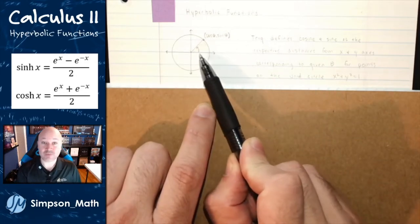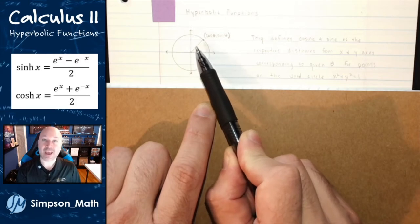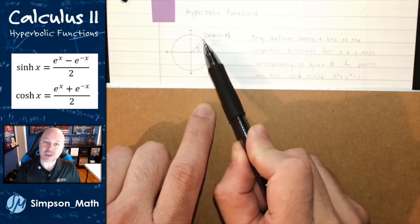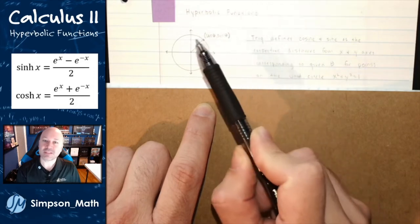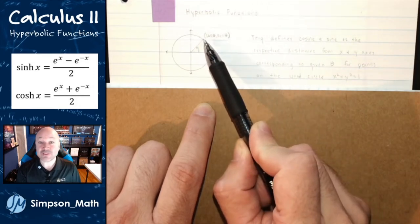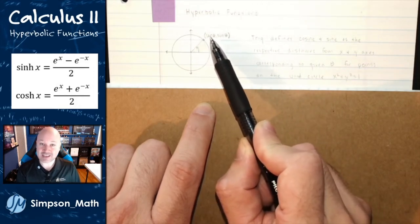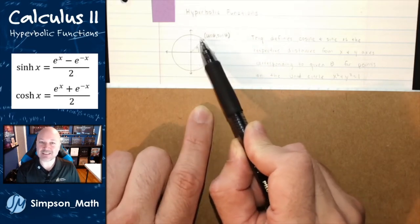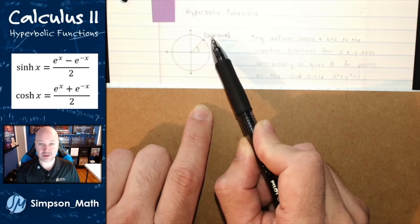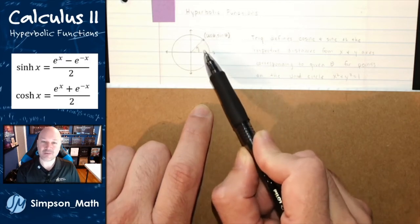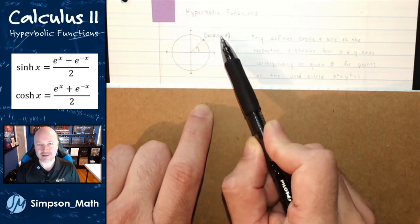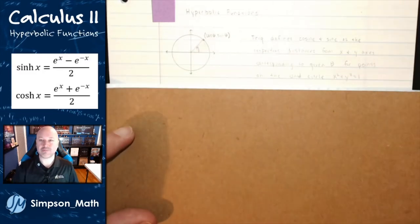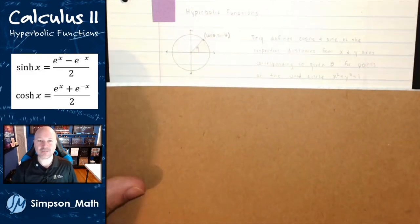Starting at the x-axis we draw our angle — that's our theta — draw a ray slicing through space, and where it intersects the unit circle we have an x value and a y value. We call that x distance away from the y-axis cosine, and the y distance away from the x-axis sine. We have a whole class on trigonometry where we play around with those values and graphs.